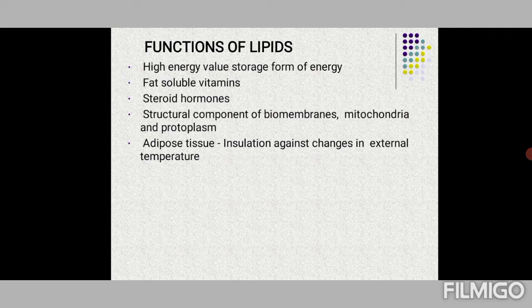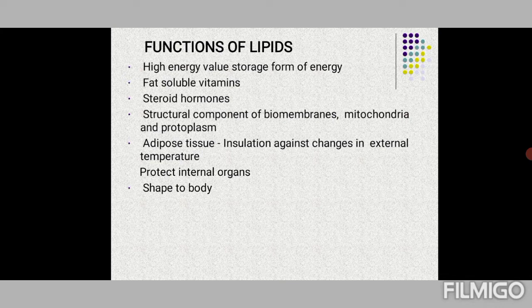Adipose tissue forms an insulation against external changes in temperature. Commonly known as body fat, adipose tissue is found all over the body — under the skin as subcutaneous fat, packed around internal organs as visceral fat, between muscles, within the bone marrow, and in breast tissue. Adipose tissue stores energy in the form of triglycerides, which can be mobilized as free fatty acids during long-term fasting. Adipose tissue also protects internal organs and gives shape and contour to the body.